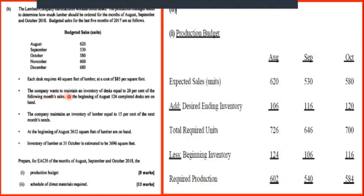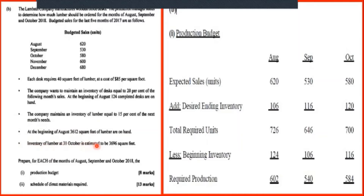The company wants to maintain an inventory of desks equal to 20% of the following month's sales. The company also maintains an inventory of lumber equal to 15% of the next month's need. At the beginning of August, 3,612 square feet of lumber were on hand. The inventory of lumber on 31st October is estimated to be 3,696 square feet.